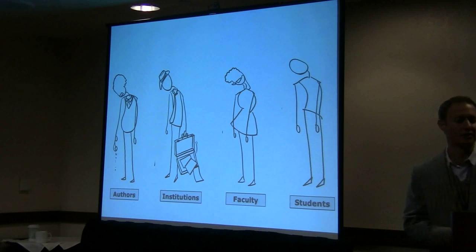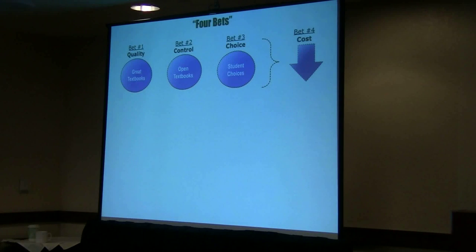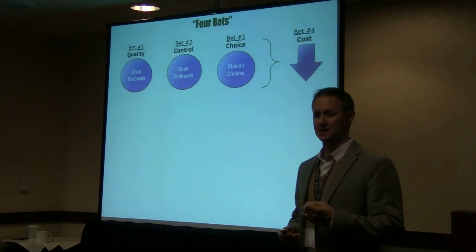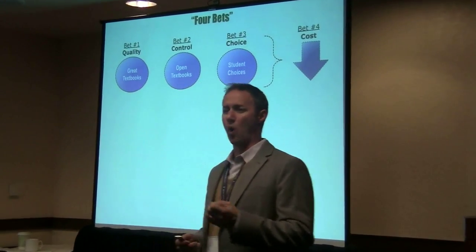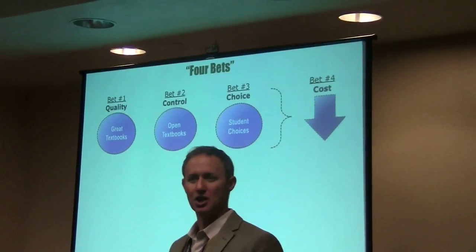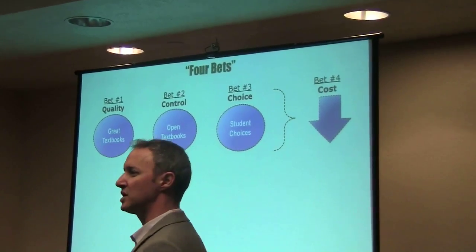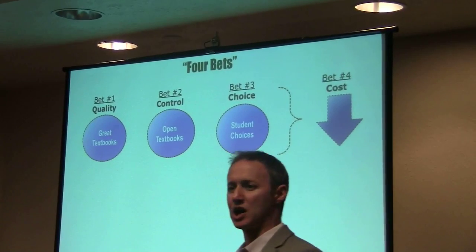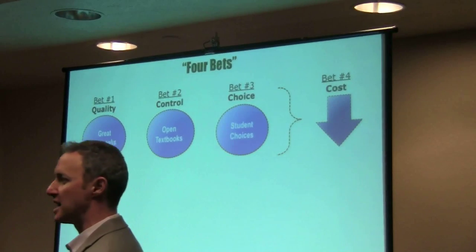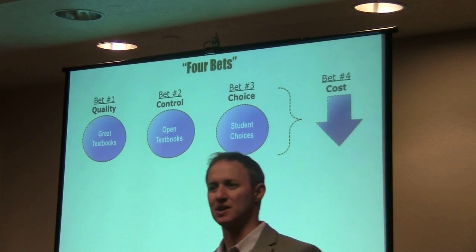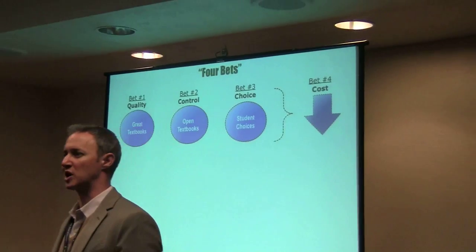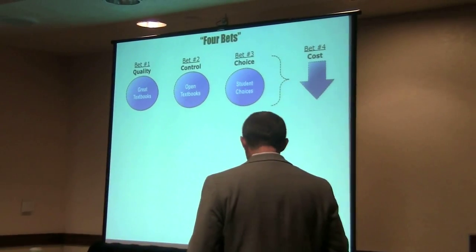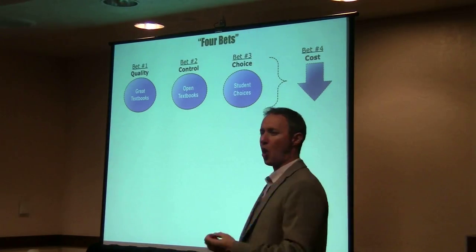Into that environment, we decided to launch a commercial open textbook publishing company. It was really around four critical bets. The first bet was that we had to have exceedingly high quality — turnkey quality. It had to be something easily adoptable and a very high-quality product for a faculty member to adopt. If they felt it was a significant step back from where they were, we would be doomed to the fringes of the marketplace.